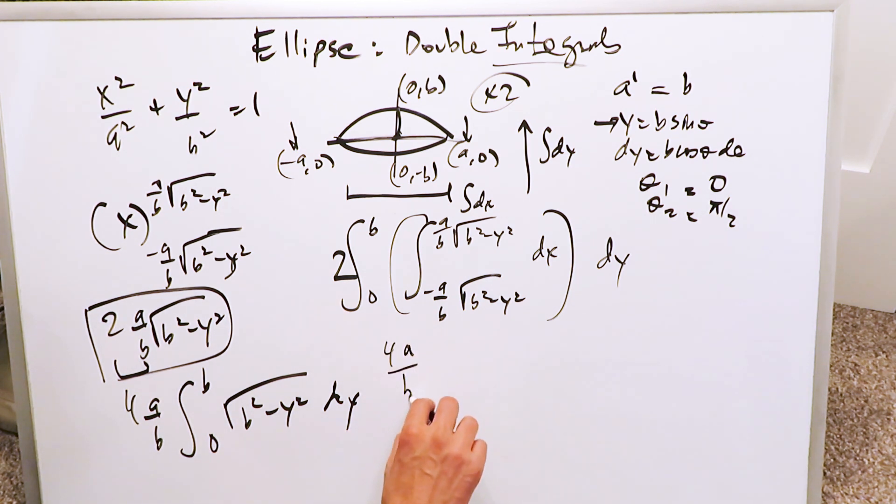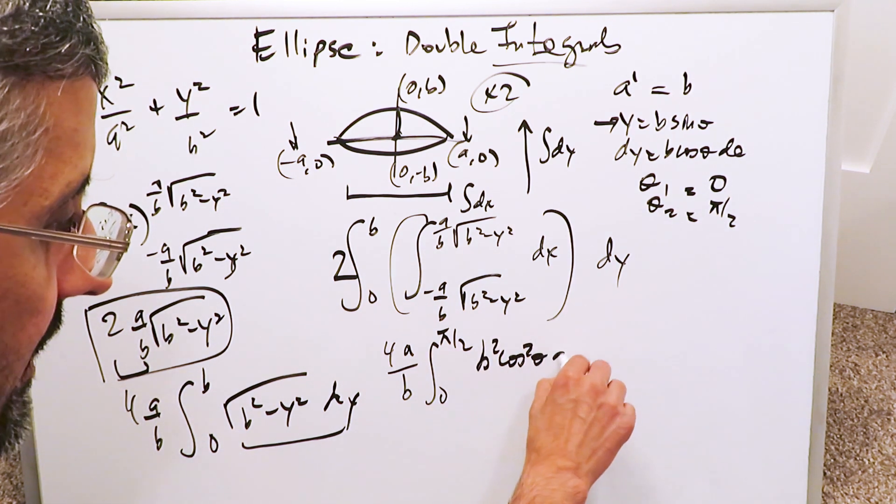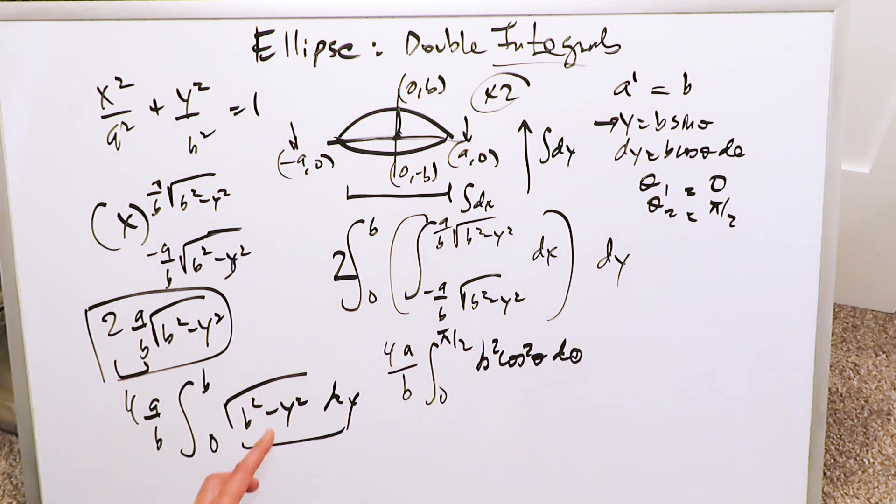There's a 4a over b, 0 to pi over 2. You bring these substitutions in here, and you know what's going to happen. You'll have a b squared minus b squared sine squared theta times b cosine theta d theta. You do all of that trigonometric identity simplification isolation. You'll have b squared cosine squared theta d theta come out of it. I don't have to show you all of that because you've seen it so many times. This b squared can come out.